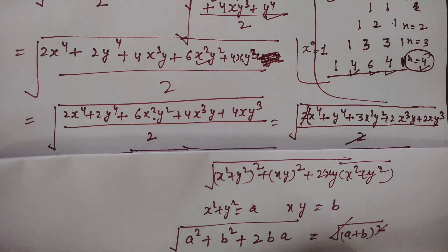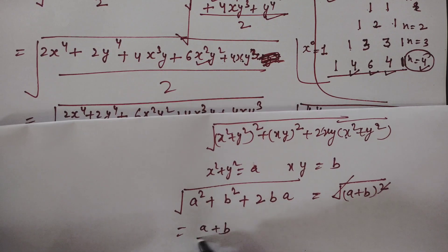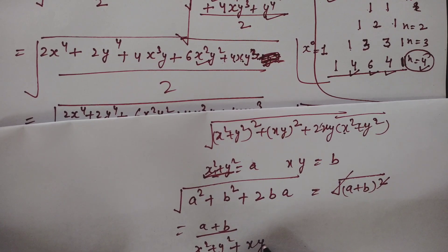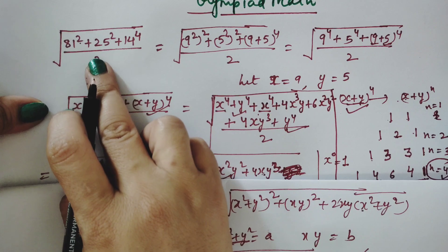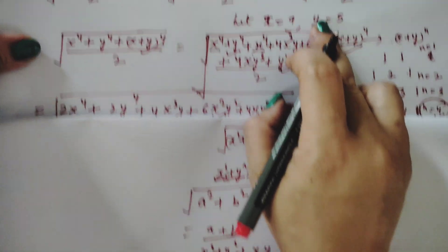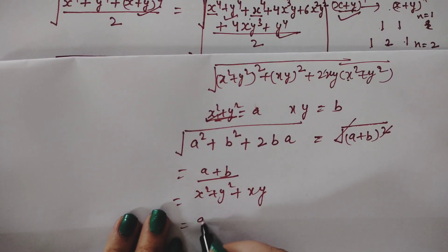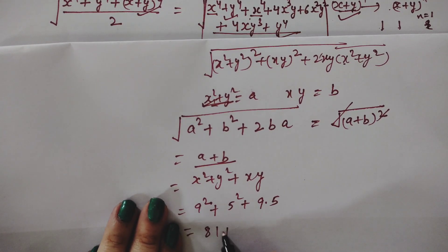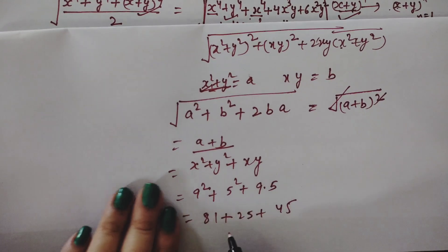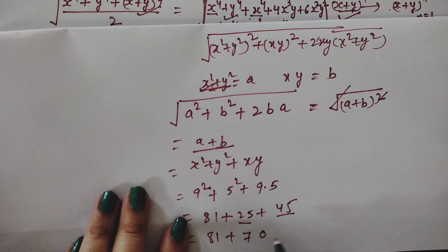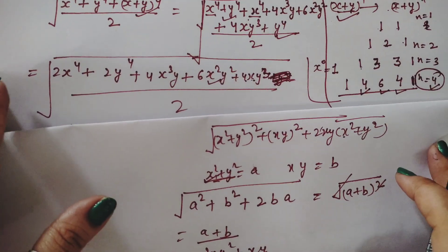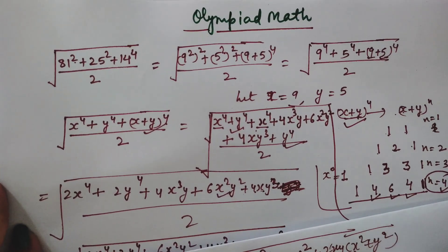Now substituting back x=9 and y=5: x²+y² = 9²+5² = 81+25 = 106, and xy = 9×5 = 45. So the final answer is 81 + 25 + 45 = 151. Don't forget any step, and if you liked this video, please like, share, and subscribe. Thank you for watching!